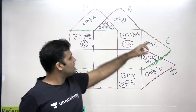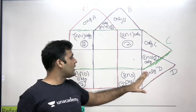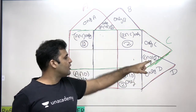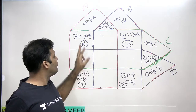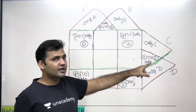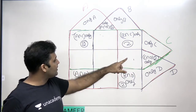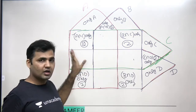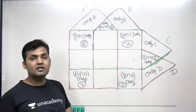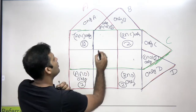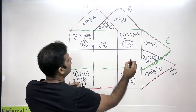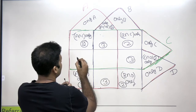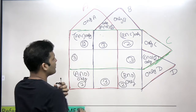So four regions belong to only one set, and six regions belong to the intersection of two sets — four corners plus two middle cells. The cells in the middle of the rows and columns belong to the intersection of three sets. There are four such cells, each belonging to the intersection of exactly three sets.